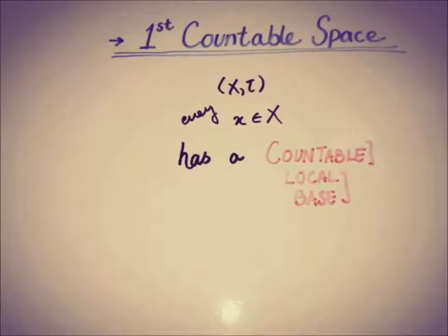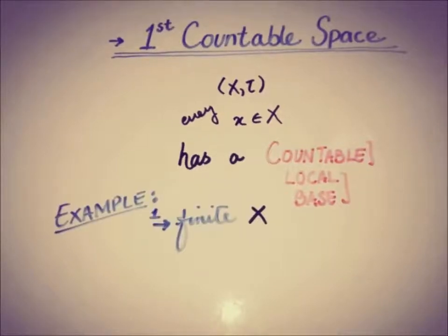Now talking about the example of the first countable space. So the very first example is every finite X, because every finite X has a first countable topological space. For such X we can easily have countable local or neighborhood base as one such example also discussed in the previous video of the local base, and that example was fortunately of the countable local base. So you can check that as well.